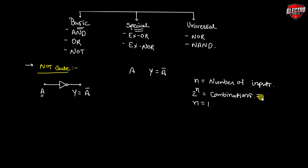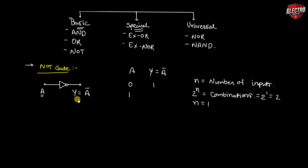The number of combinations is equal to 2 raised to 1, meaning only two combinations. For the first combination, A = 0: if we apply 0 to the NOT gate, then Y = A complement, so we get Y = 1. If we apply A = 1, then Y = A complement, so we get 0. This is the truth table for the NOT gate.